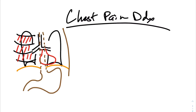The main idea around this is to show you that you have to have an approach when you're thinking about what the differential is for a certain symptom. And when it comes to something like chest pain, the way that I like to think about it is: what is in the actual chest cavity, your thoracic cavity, that can give you chest pain?